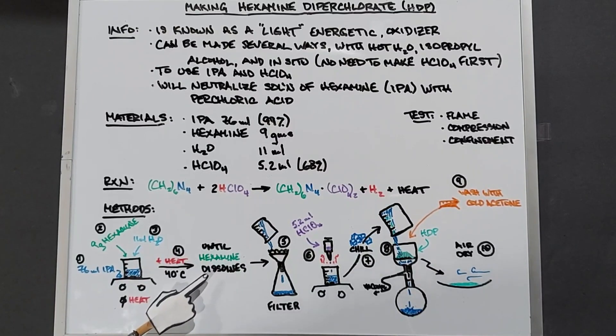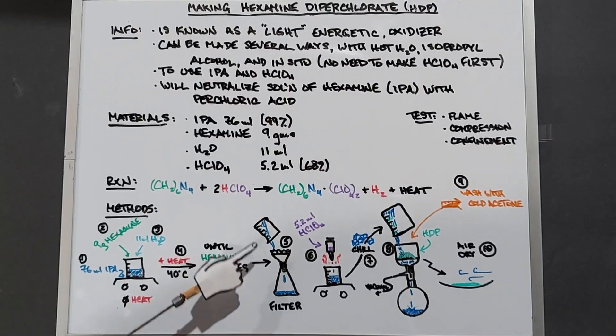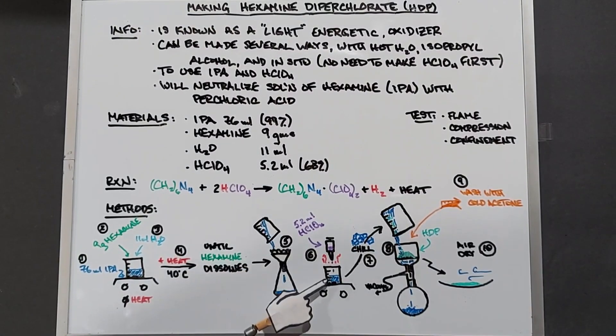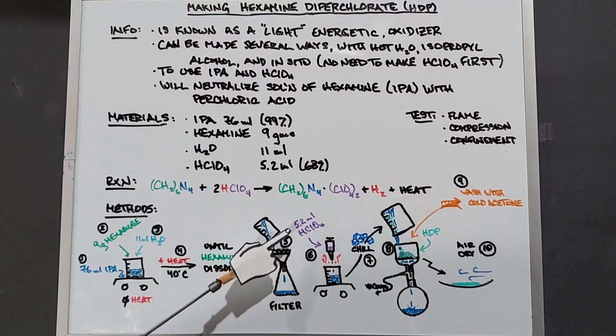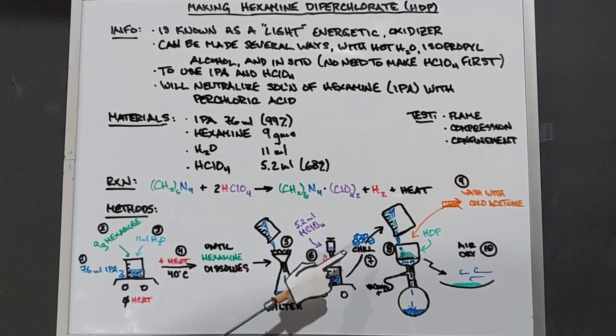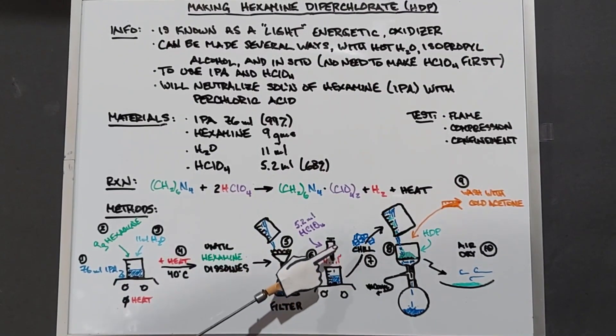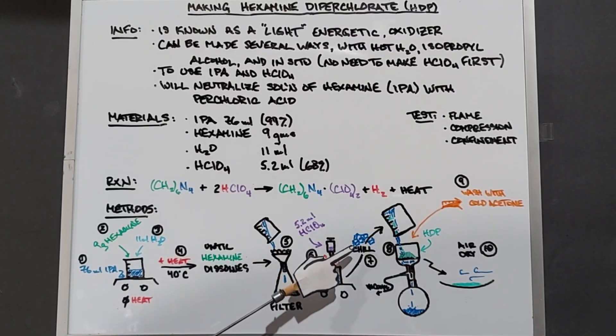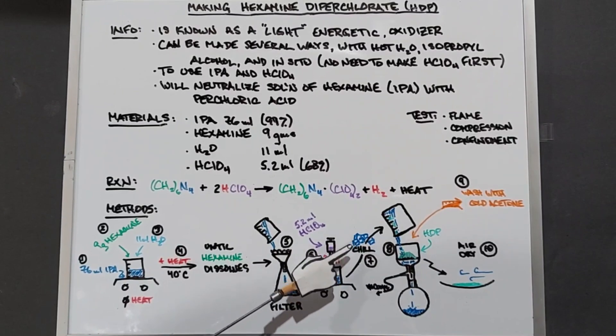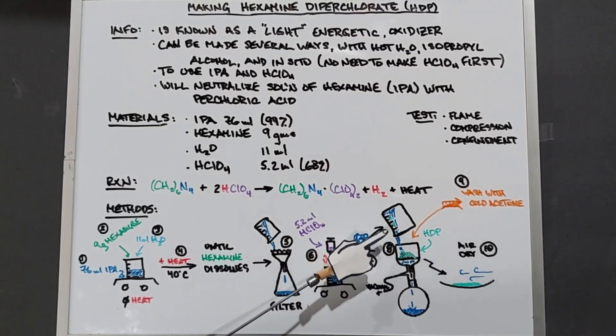We do this until the hexamine dissolves. At that point I'm going to filter this if necessary. We'll put it back on a stir plate and stir it while we're adding the 5.2 milliliters of perchloric acid. Again it is exothermic so we're going to chill it. I'll probably put it in a fridge. We're going to get it down to 5 to 10 degrees Celsius.